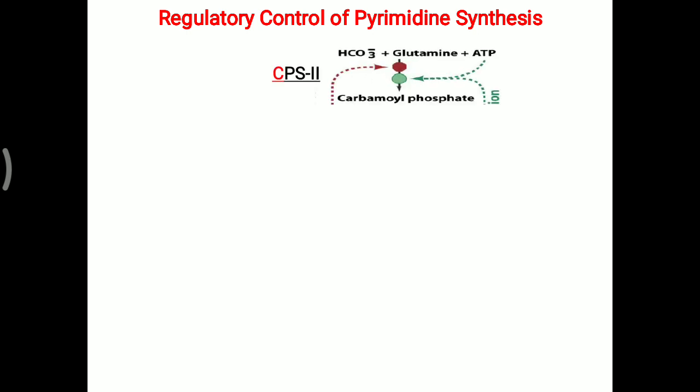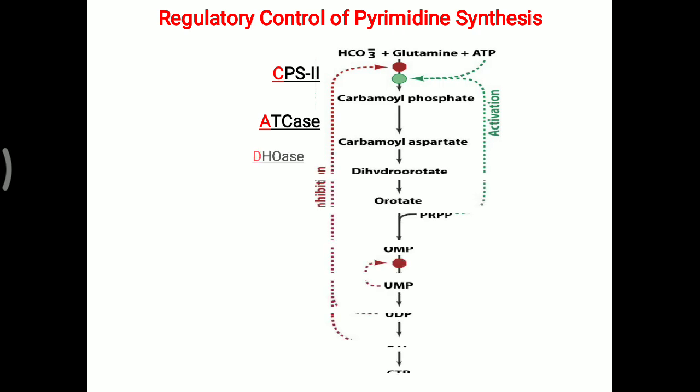Pyrimidine formation basically needed bicarbonate plus glutamine plus ATP with the help of CPS2 enzyme. It is converted into carbamyl phosphate. CPS2 that is carbamyl phosphate synthetase 2. Further, this carbamyl phosphate is converted into carbamyl aspartate with the help of ATKs enzyme. Now, this carbamyl aspartate is converted into dihydroorotate by the enzyme DHOase.